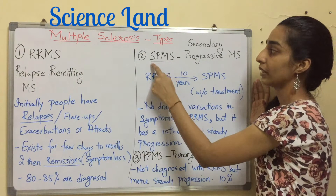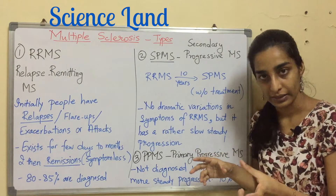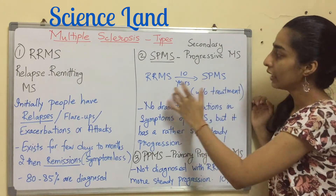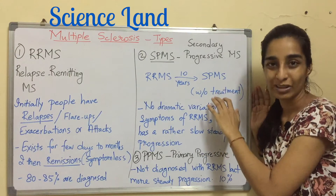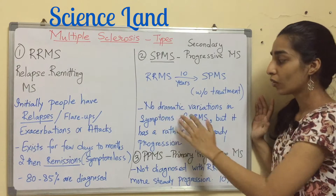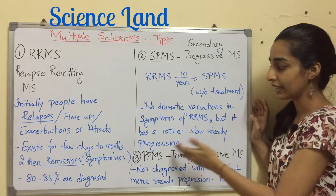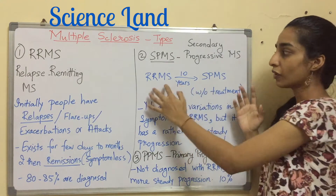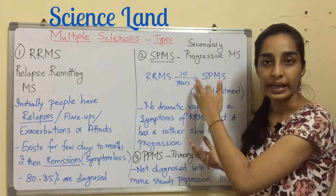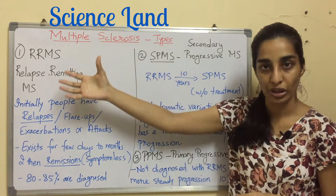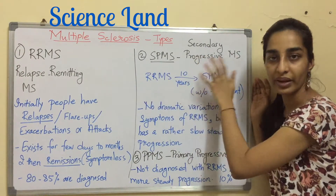The second type is SPMS — secondary progressive multiple sclerosis. What happens is that RRMS progresses over a period of time to SPMS. This advancement is usually within 10 years if the patient does not take any treatment. There are no dramatic variations in symptoms; rather it has a slow and steady progression of the disease. The symptoms of RRMS in this type remain the same and constant, but whatever symptoms were initially present will slowly and steadily progress — that's why it's called secondary progressive multiple sclerosis.